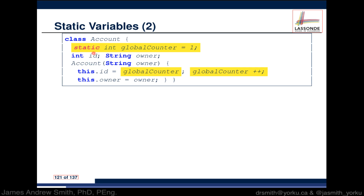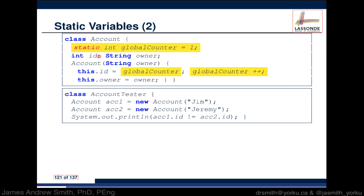Static variables are in some ways like global variables — the same value is available to all instances of that class. It's basically shared among different instances of the class. We start by having an integer called globalCounter, starting with a value of one. We use the keyword static to make it available across all instances.